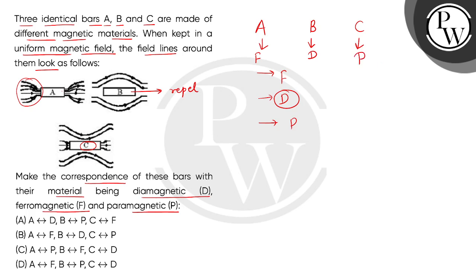So our sequence becomes A, F, B, D, C, P. So correct option will be option B. Thank you and see you next time.